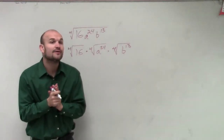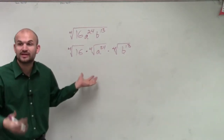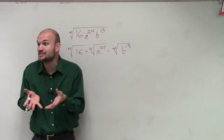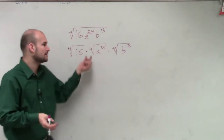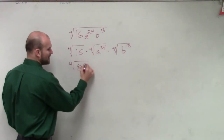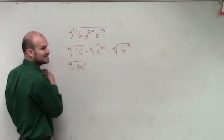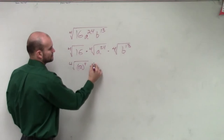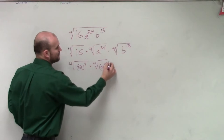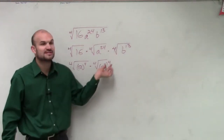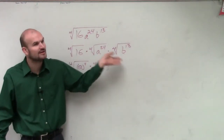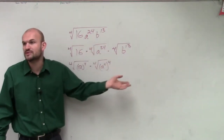Now the next step is to see if we can simplify each one of these by taking the fourth root. We want to see if we can raise each number to that fourth power. The fourth root of 16 — we can write that as 2 to the fourth power. What about a to the 24th? We could say a to the sixth, to the fourth power, because 6 times 4 gives us 24.